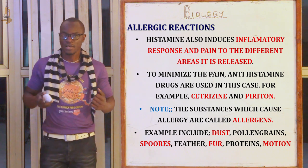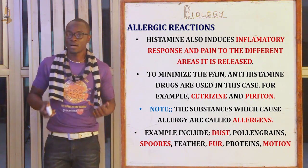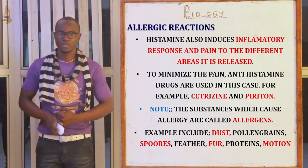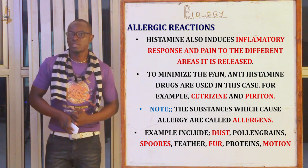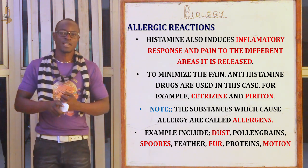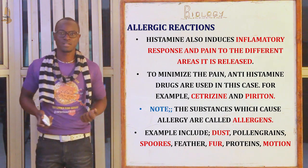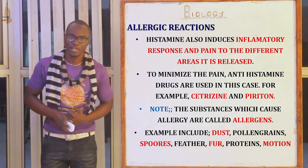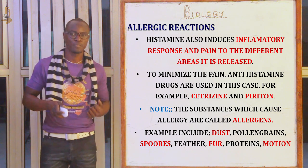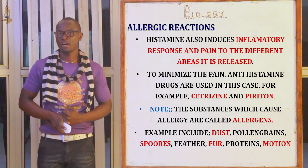To minimize the pain, antihistamine drugs are used. For example, we have cetirizine and we also have pyridone. The substances that cause an allergy are called allergens. Examples of allergens include dust, pollen grains, feathers, proteins, and motion.